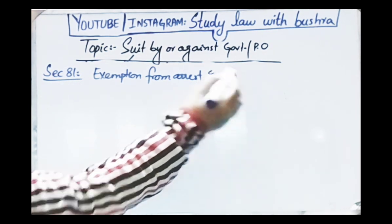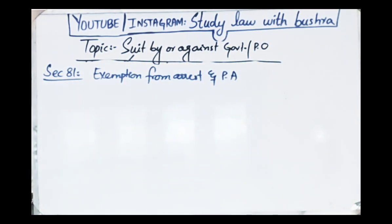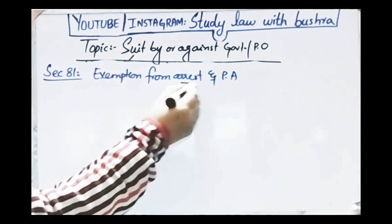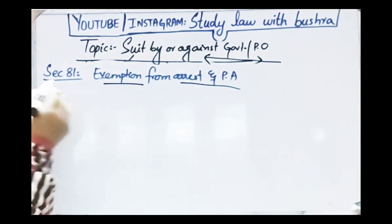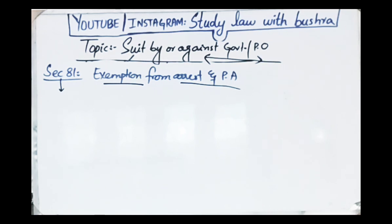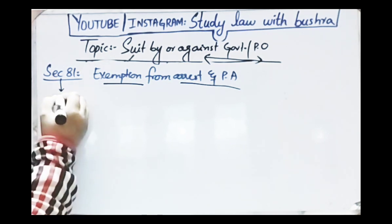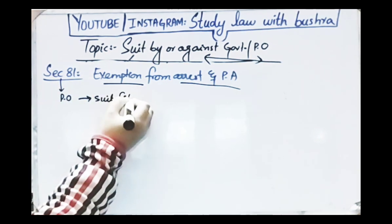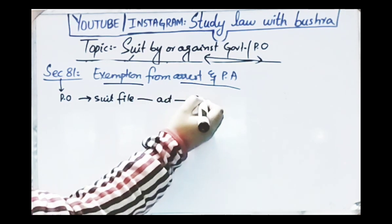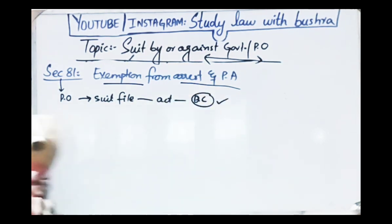Who is exempted from arrest or personal appearance? We are studying the topic of suits by and against the government and public officers. Section 81 states: in a suit instituted against the public officer in respect of any act purporting to be done by him in his official capacity — where a public officer has performed an act within his official capacity and someone files a suit against that act. The public officer did not do this in a personal capacity; during his job he performed an act which makes you unhappy.